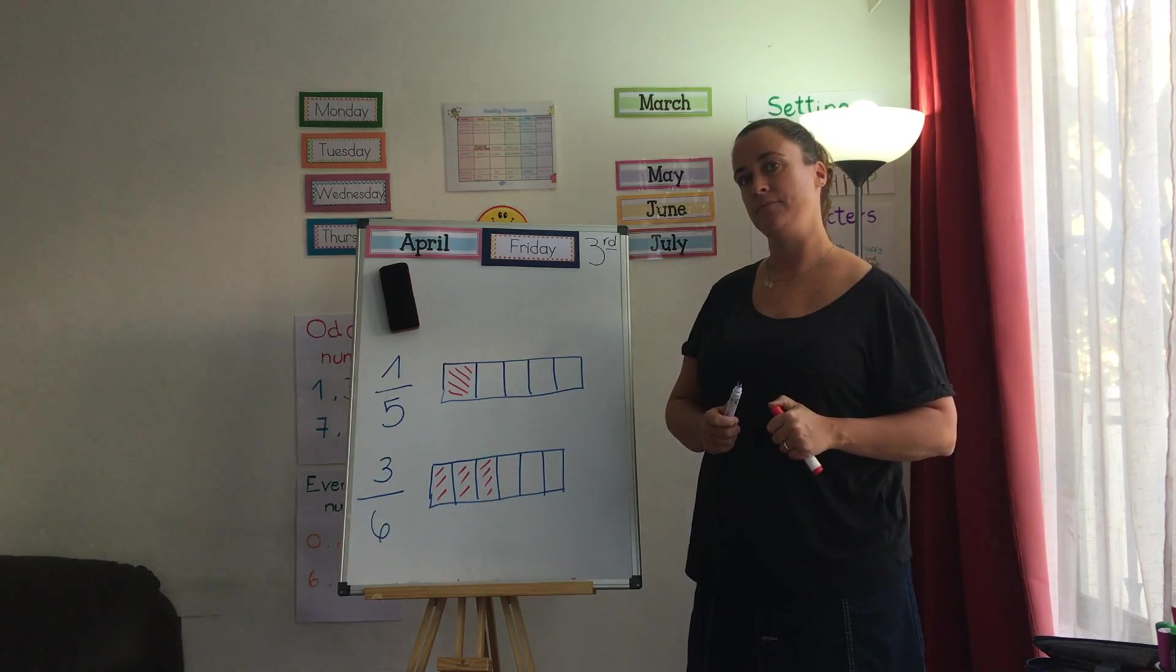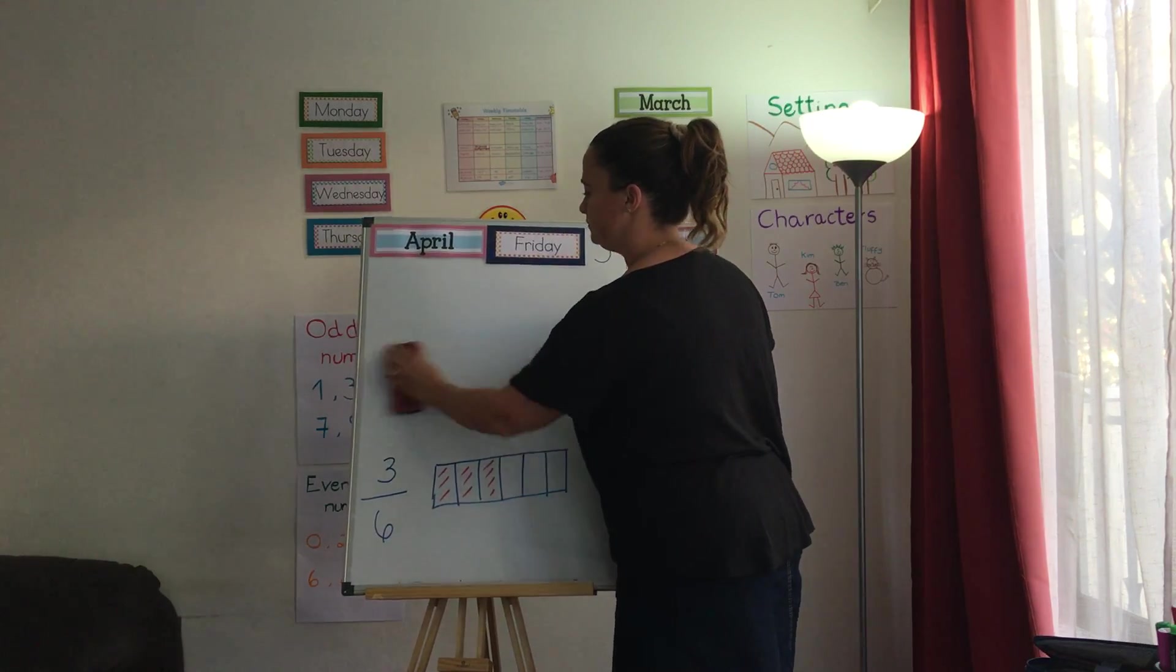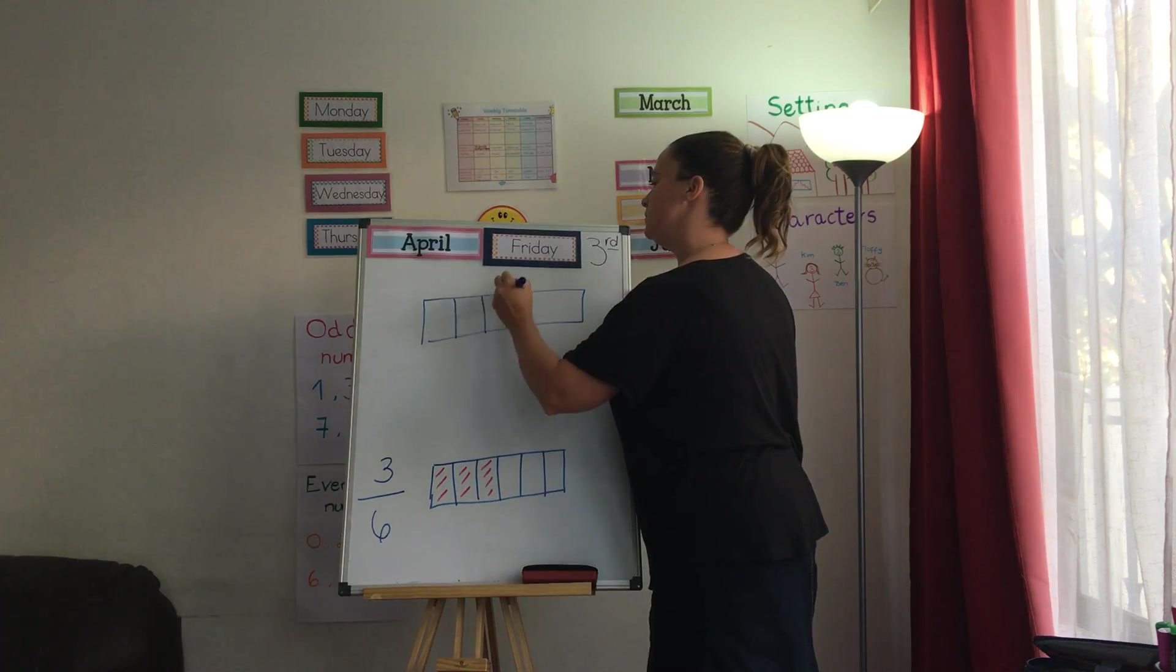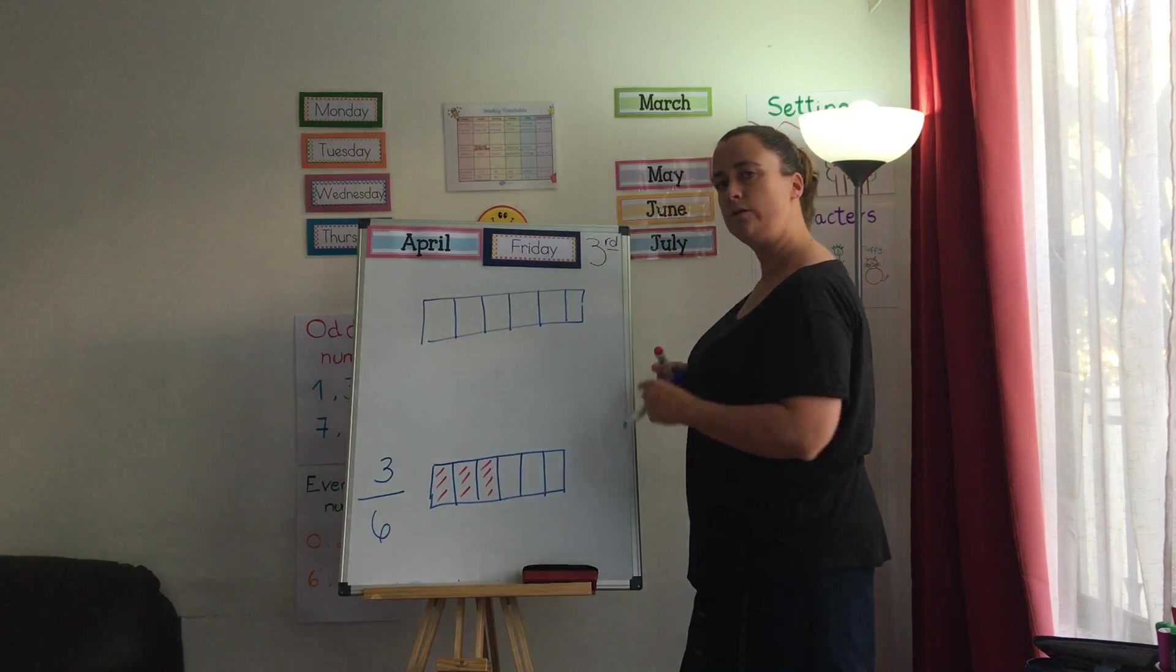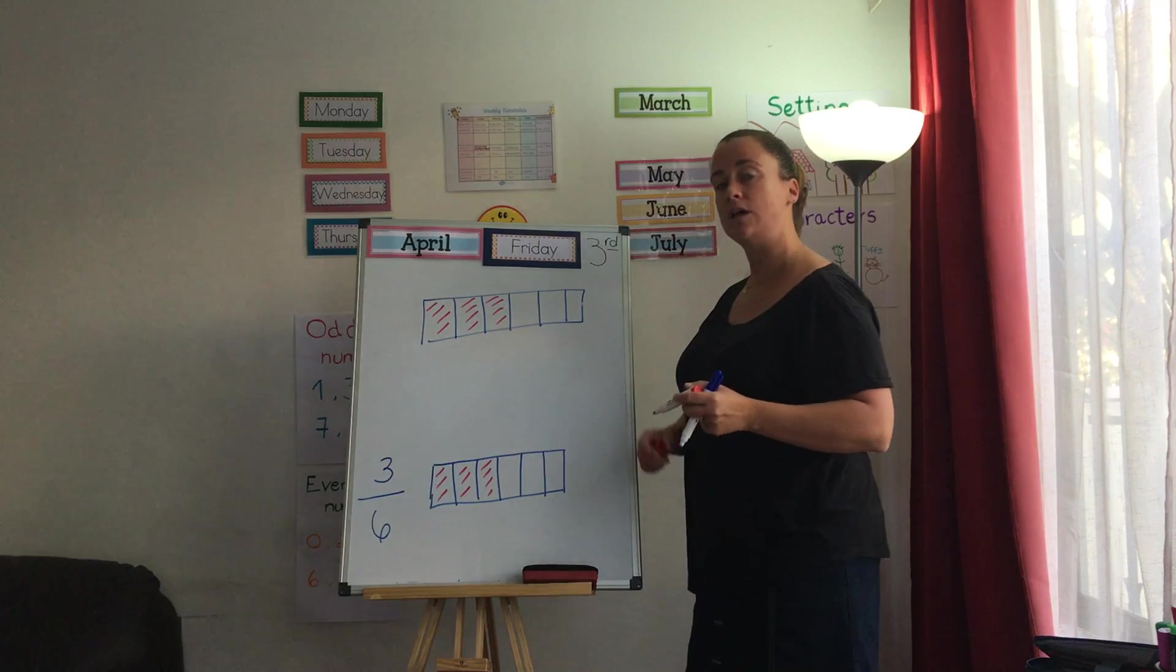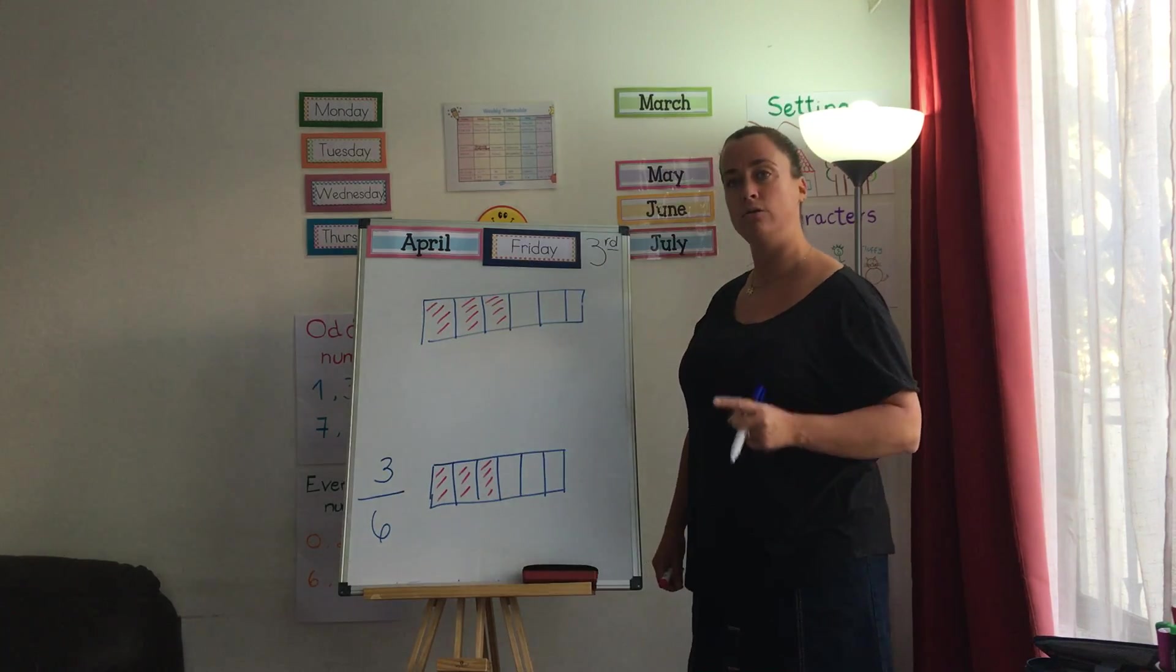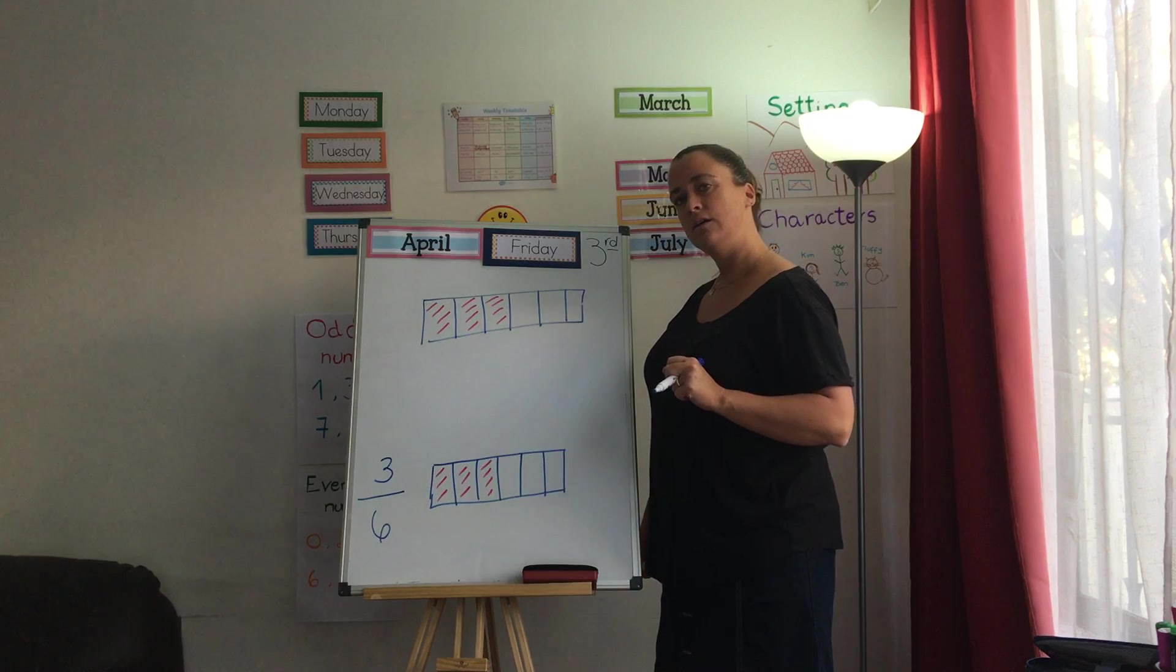And now, using this one, I'm going to move it further up. Using this one, 1, 2, 3, 4. 1, 2, 3. 1, 2, 3. Good. Using this one, who can give me another answer? I've got my whole. Yes. I've got 6 parts of my whole. Yes. I ate 3.